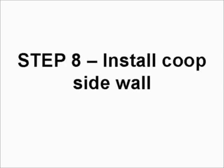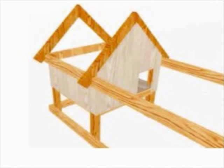Step eight, install the coop sidewall. To do this, once again use half inch plywood cut 16 and a half inches by 35 inches.